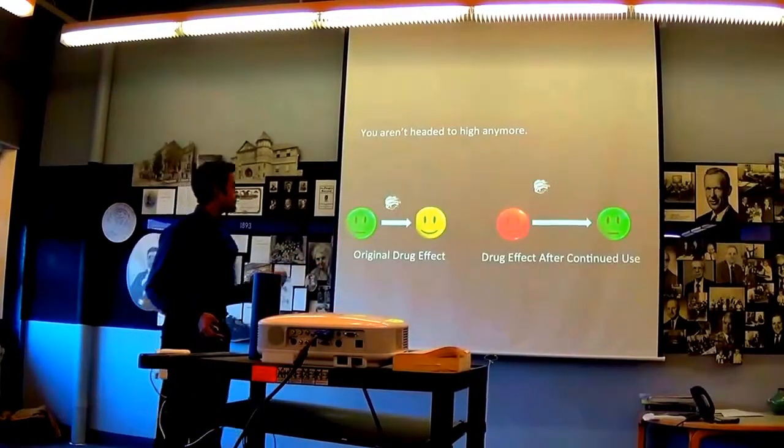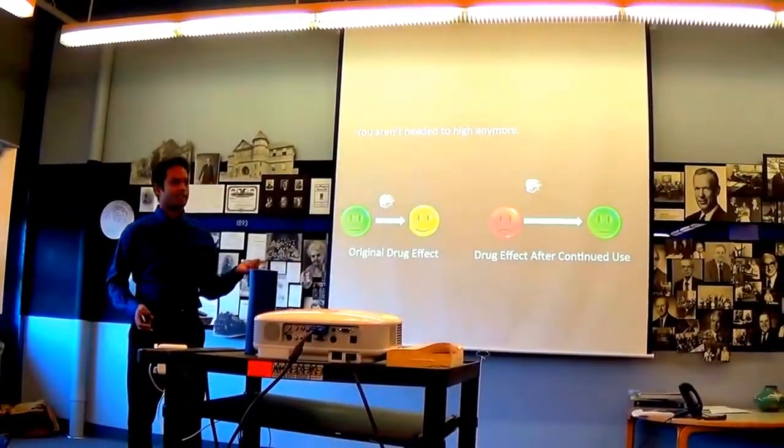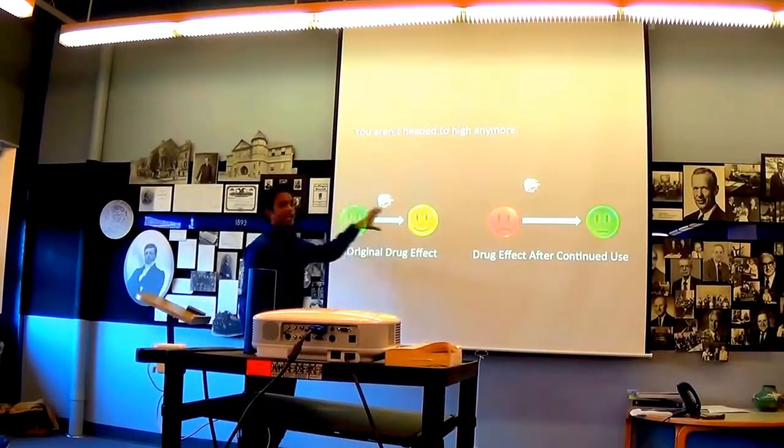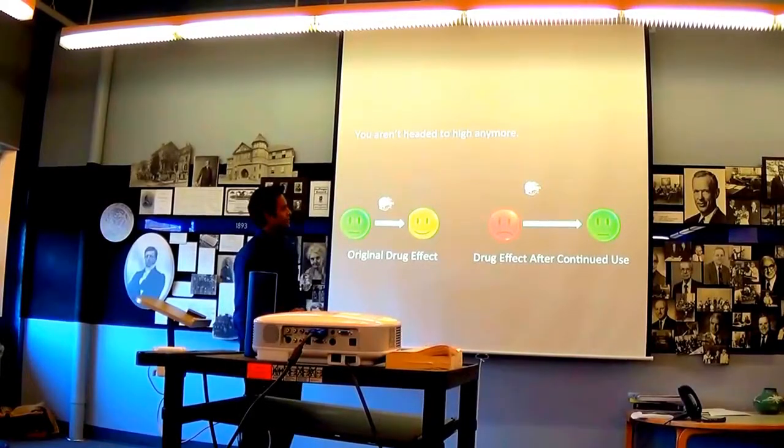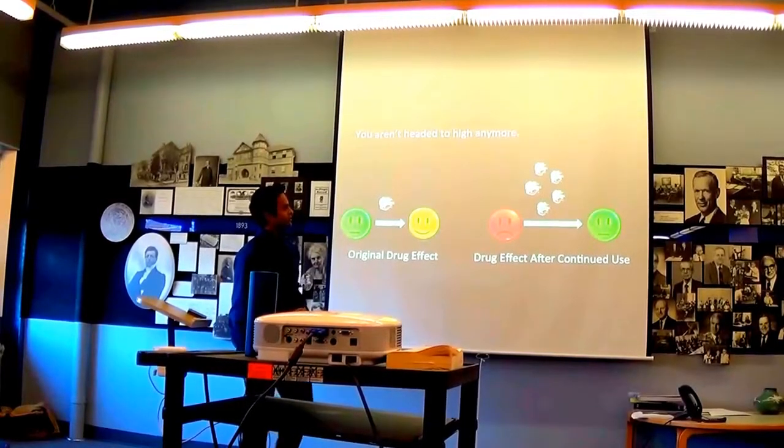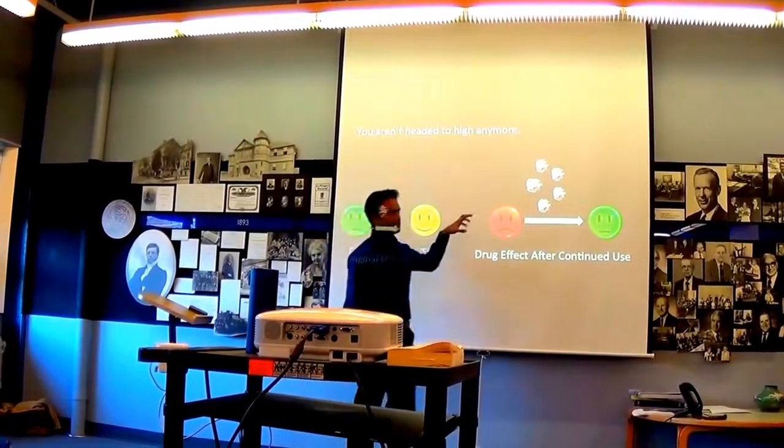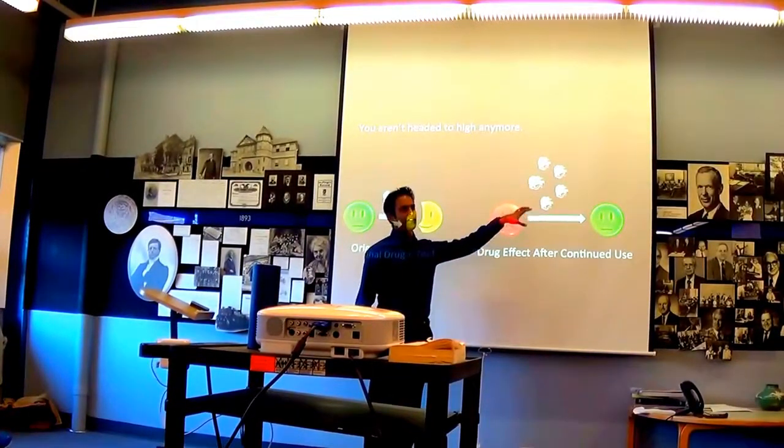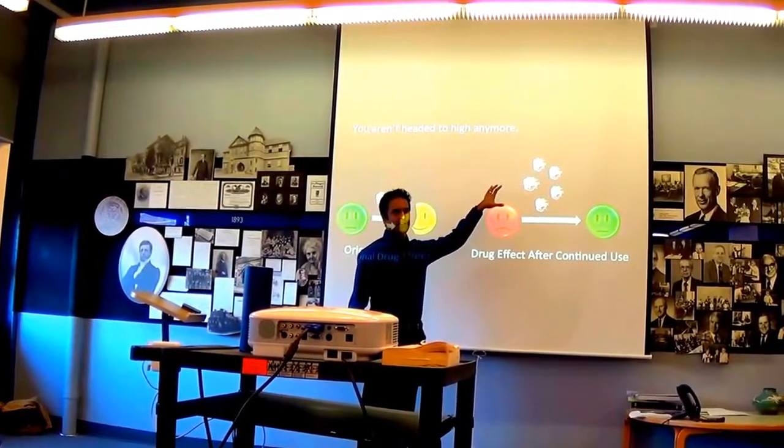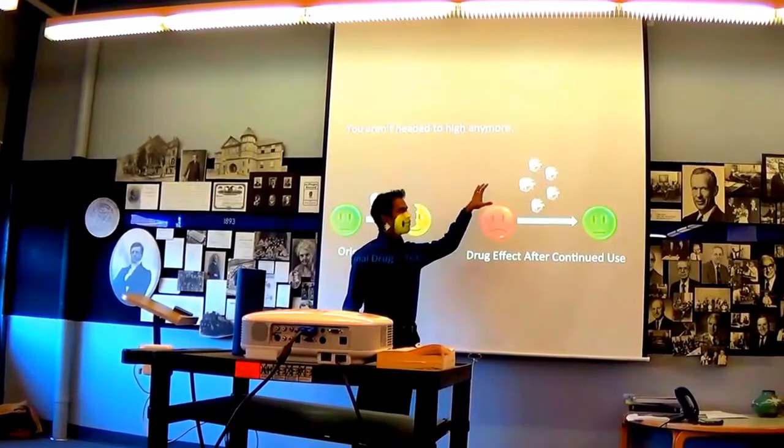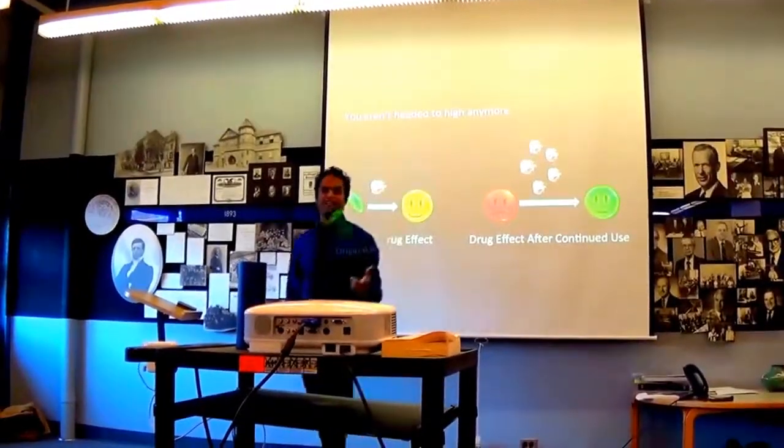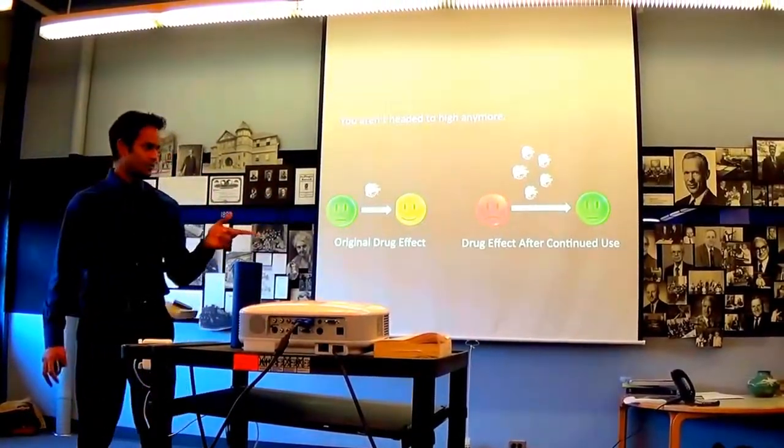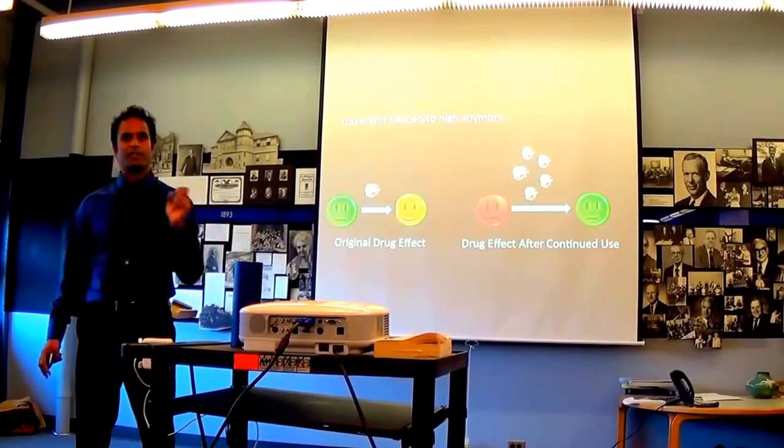What does that translate into? Red velvet cake. Originally we're going from regular to happy using one piece. Now we're going from depressed to regular using many pieces. So we're no longer seeking to get high. That's no longer the goal. The goal is now normal, and a little bit of the drug isn't going to do it. It's going to take a lot.